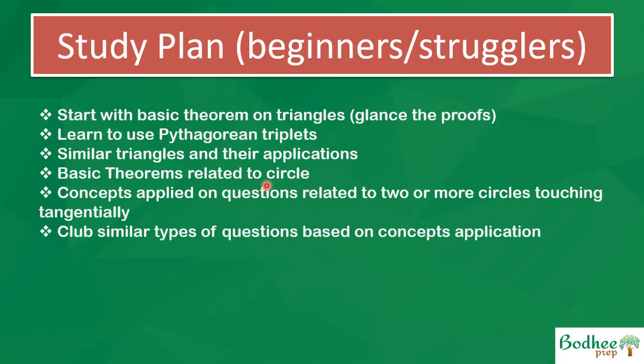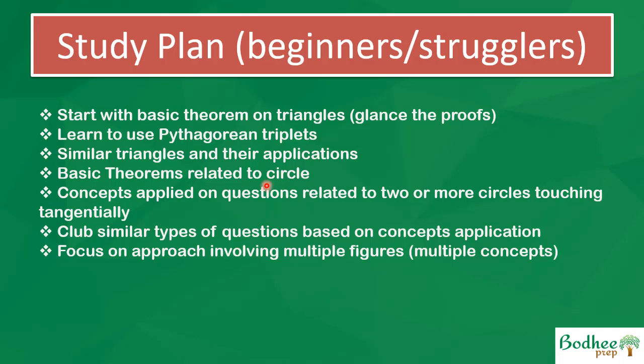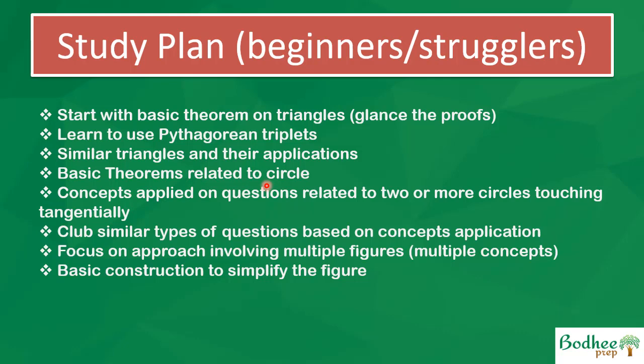In CAT geometry questions, you won't be using only one concept at a time — you'll use circles, similar triangles, and ratio and proportion together to arrive at answers. Multiple concepts are applied in one go. You also need to focus on questions involving multiple figures — for example, a triangle containing a circle, which itself contains another triangle. For constructions, learn how to extend a line, bring a perpendicular, and create intersections to find vertically opposite angles.